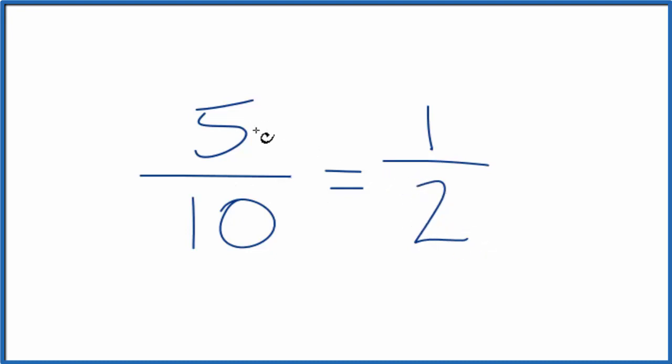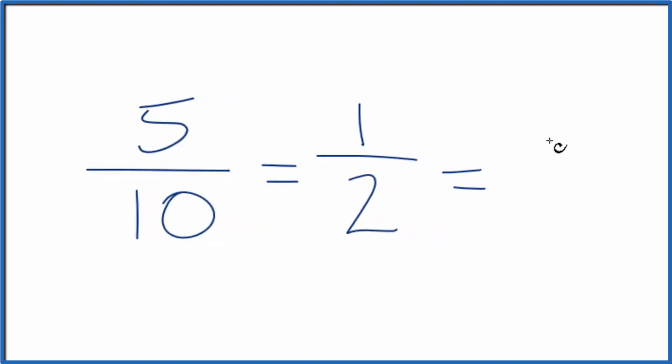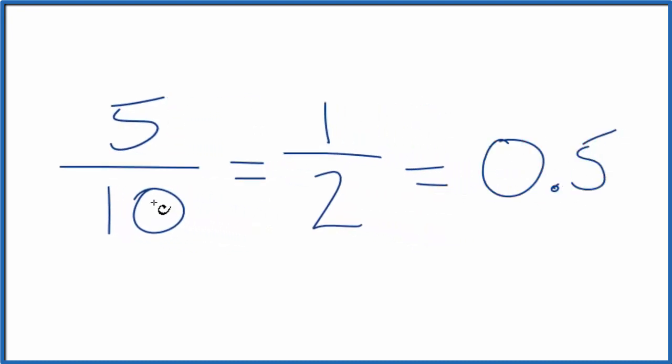It really doesn't matter if we have 5 tenths or 1 half, they'll be the same fraction. If you put 5 divided by 10 in your calculator or 1 divided by 2, you'll get 0.5. So the fraction 5 tenths as a decimal, that's 0.5.